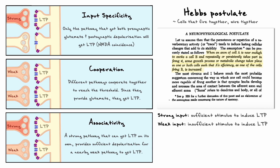These concepts — cooperativity, associativity, and input specificity — are key to understanding fundamental aspects of memory, which are mediated by the hippocampus. Cooperativity ensures that only events that are really important result in memory formation, because they need to attain a certain threshold before the postsynaptic cell fires. Associativity is similar to Pavlovian conditioning: a strong unconditioned stimulus will be associated with a conditioned or weak pathway to enhance the connection. Lastly, input specificity ensures that only specific memories are encoded and retrieved.